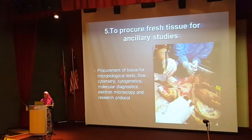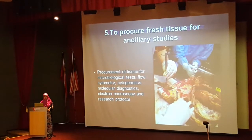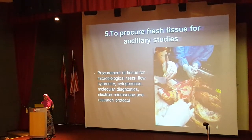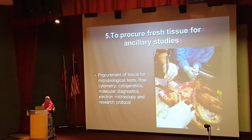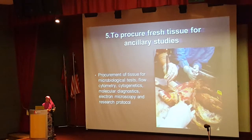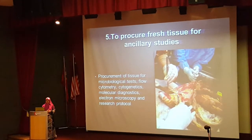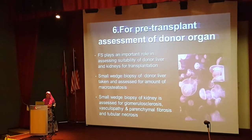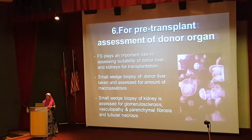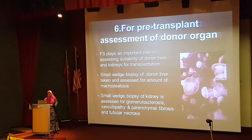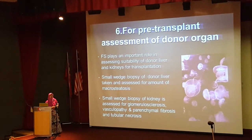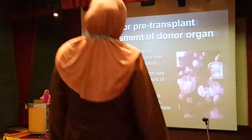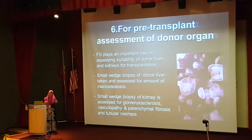The fifth indication is procuring fresh tissue for microbiological tests or more complex tests such as flow cytometry or molecular tests, which requires coordination with the pathology department since fixed tissue cannot be used. The sixth and last indication is pre-transplant assessment of donor organs. In our centre we perform frozen sections for donated livers and kidneys, as certain morphological features we assess on frozen section correlate with how well the graft is taken by the patient.